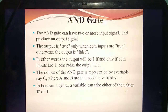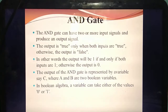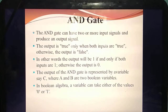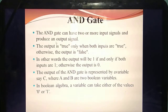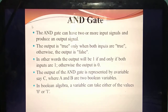The AND gate has two input signals — A and B — and one output signal Y (or C). Y equal to A dot B. How many input signals? Two. How many output signals? Only one. We are giving two or more input signals, but it will produce only one output signal.